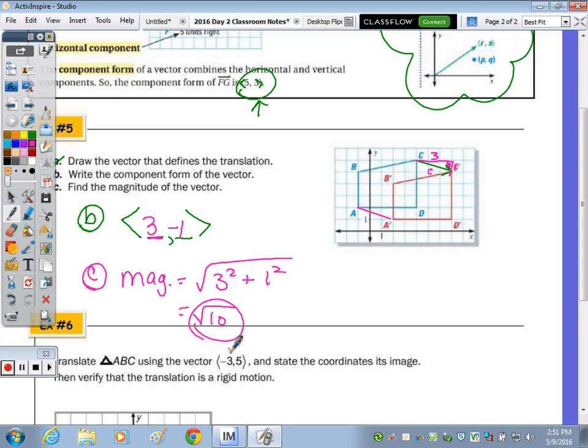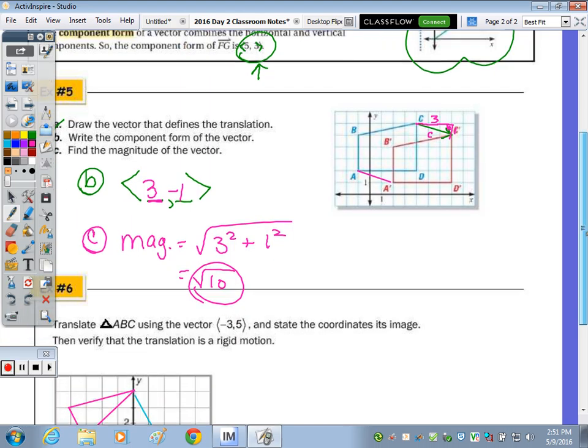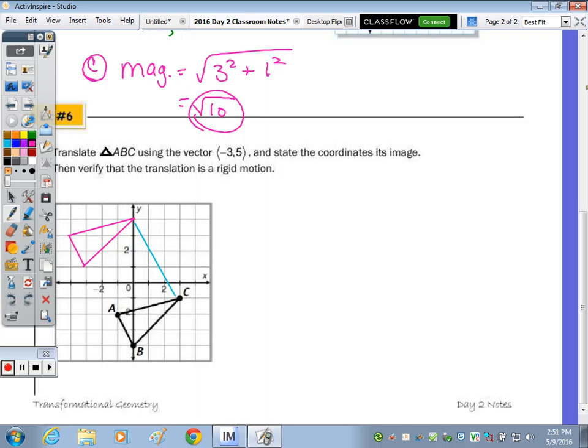Last question, translate the triangle. So to translate this triangle using this vector, in words, if that's a negative, it means we're going left 3, positive 5 is up 5. You could write out all the coordinates for your A, your B, and your C, all three points, and then subtract 3, add 5, but it's easier just to go left 1, 2, 3, and up 1, 2, 3, 4, 5.